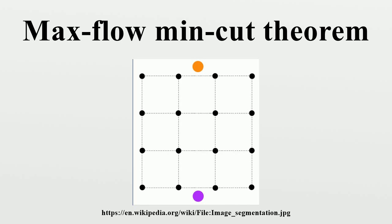Proof: Let G be a network with S and T being the source and the sink of G respectively. Consider the flow F computed for G by the Ford-Fulkerson algorithm. In the residual graph obtained for G, define two subsets of vertices: A — the set of vertices reachable from S in GF; and B = V minus A — the set of remaining vertices. Claim: |F| = C(A, B), where the capacity of an S-T cut is as defined. We know this holds for any subset of vertices.